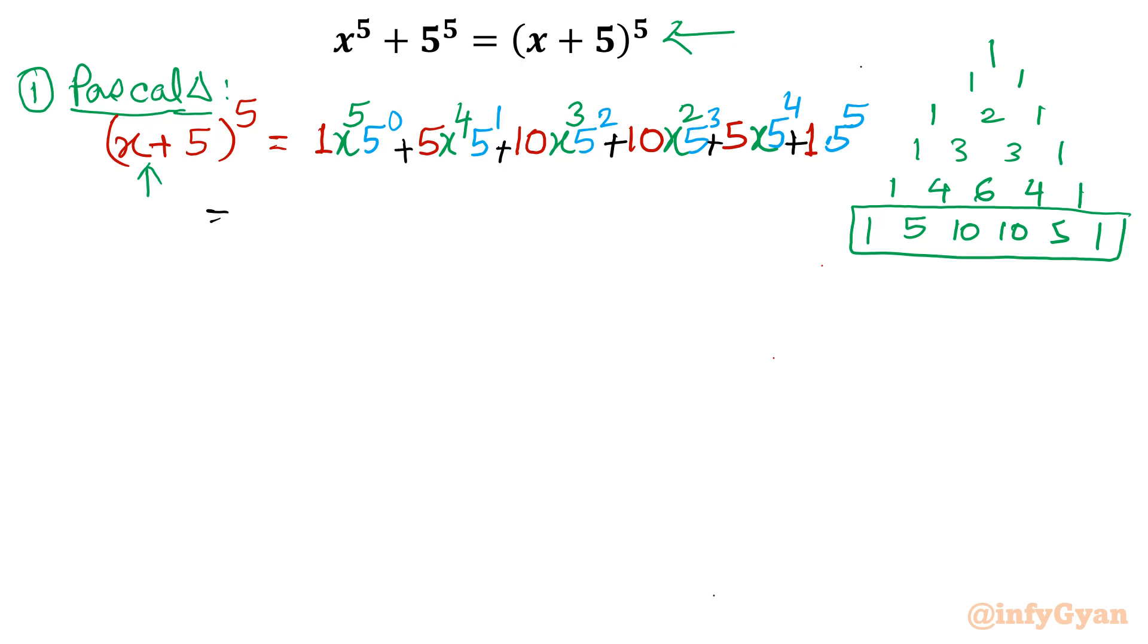This gives us x^5 + 25x^4 + 250x^3 + 1250x^2 + 3125x + 5^5. Now LHS is x^5 + 5^5.